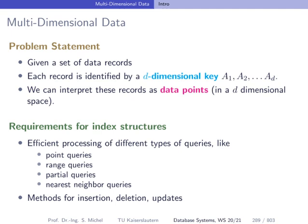Here's the problem statement. It's very clean, very crisp. We have a set of data records, for instance stored in a database table, and these records are identified by a d-dimensional key. So we have d attributes, a1 to ad, and these are representing the object. In a two-dimensional space, this can be coordinates on a map or even in three-dimensional space. This requires special index structures because the B-tree only operates on one-dimensional keys. And composite keys are not the same as d-dimensional keys, that's important.